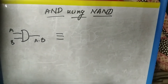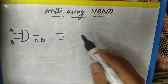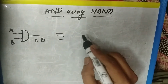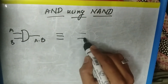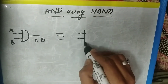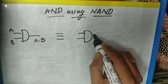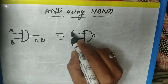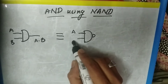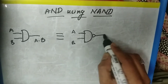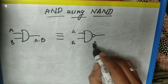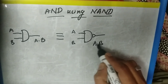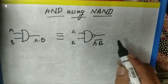To convert using NAND gate, we will take the NAND gate here. So we have the NAND gate with A and B as inputs. The output of the NAND gate, as we know, is A dot B whole bar.